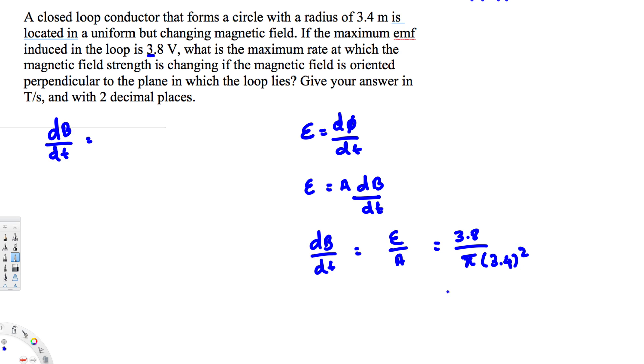So this is going to be 3.4 squared. And if you calculate this one, you will get 0.1046. The unit is going to be tesla per second because this is magnetic field divided by time. So this is going to be tesla per second.